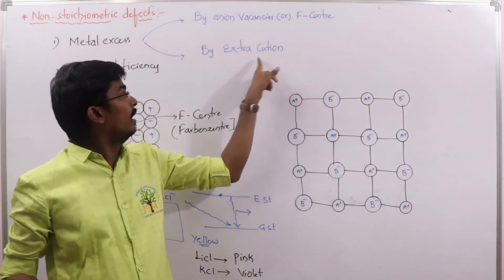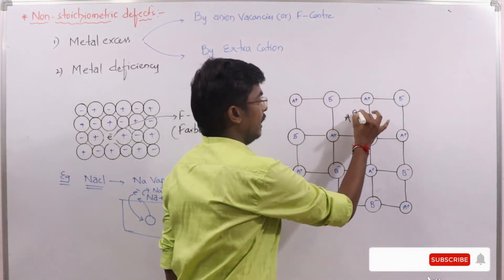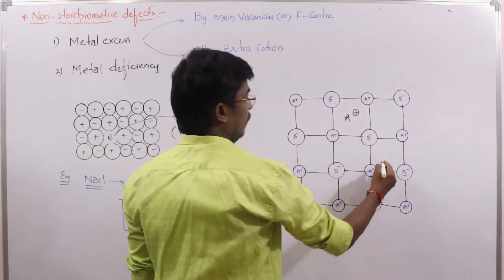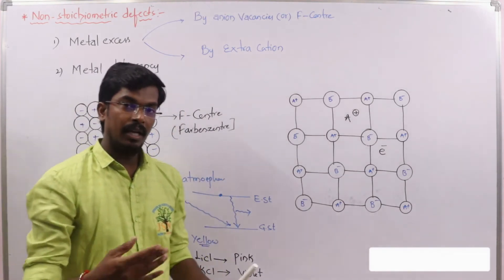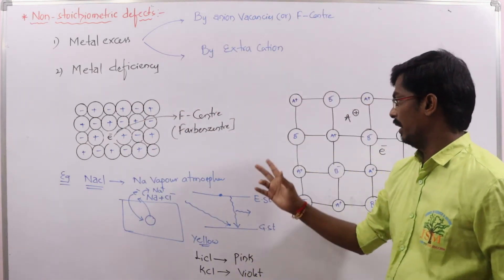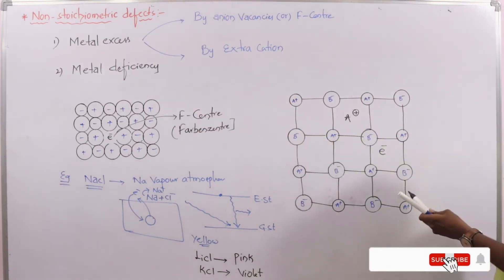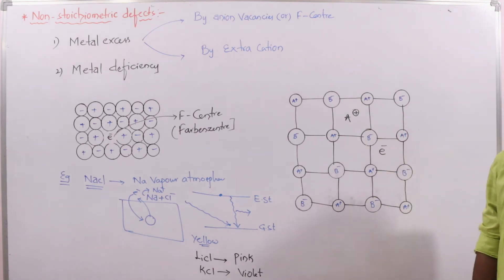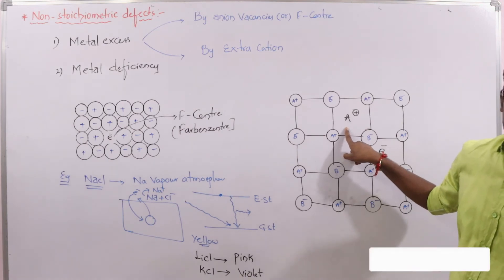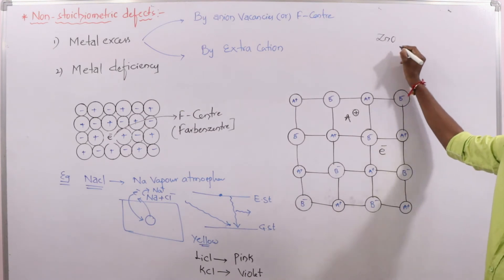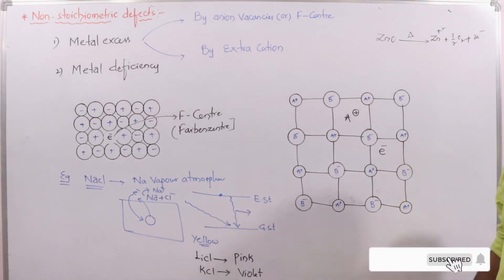Now let us see metal excess by extra cation. Here, one extra cation occupies an interstitial site, along with an electron in another interstitial site, to maintain electrical neutrality. In ionic solids, electrical neutrality must always be maintained. The number of positive and negative charges are the same, but the ratio of cations and anions is different — that's why it's called metal excess defect.